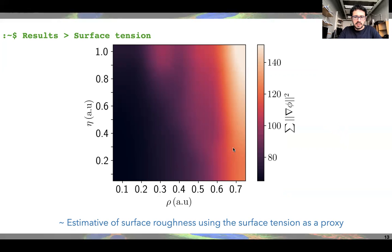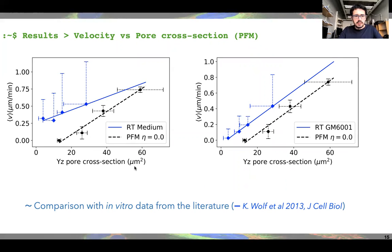When we have a high surface tension, the cell is more deformed. We see that for a high density of fibers and a high adhesion coefficient, we have more surface roughness in our cell. In order to compare our results with experimental data in the literature, we also computed the pore cross-section. Here we are comparing our results with fibrosarcoma cells from a cell line migrating in rat tail collagen, without and with the metalloproteinase inhibitor GM6001.